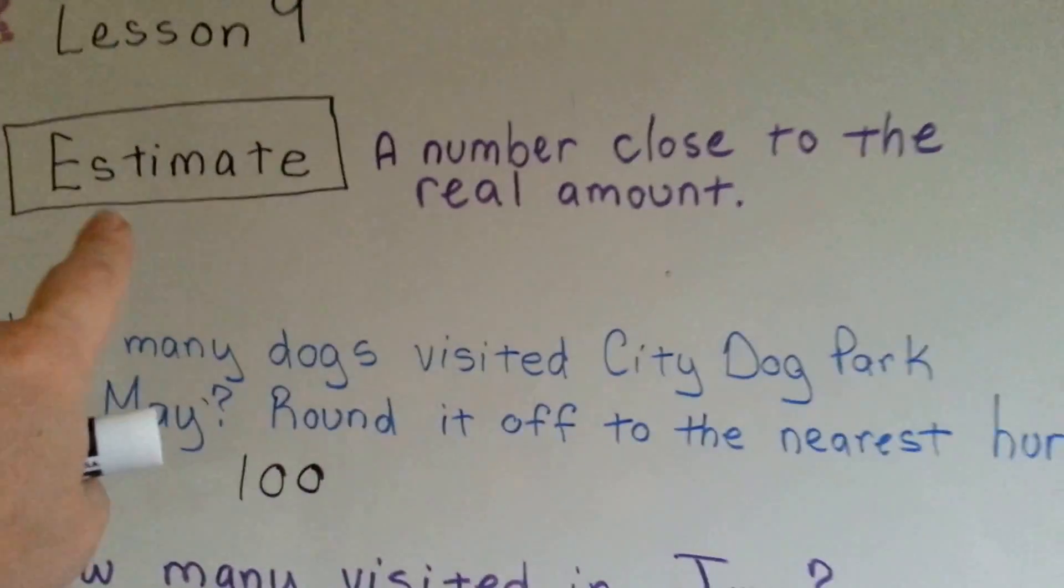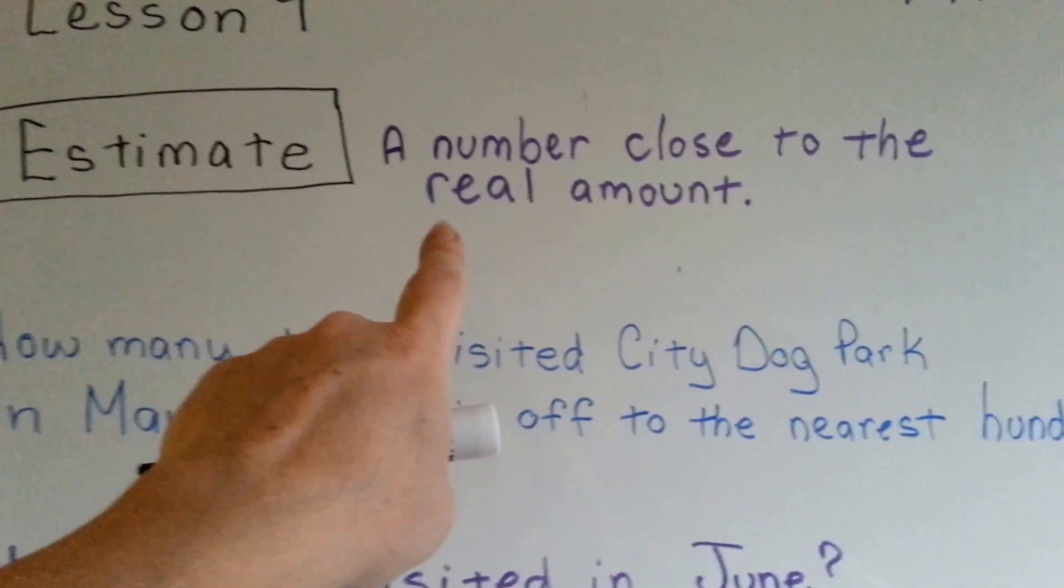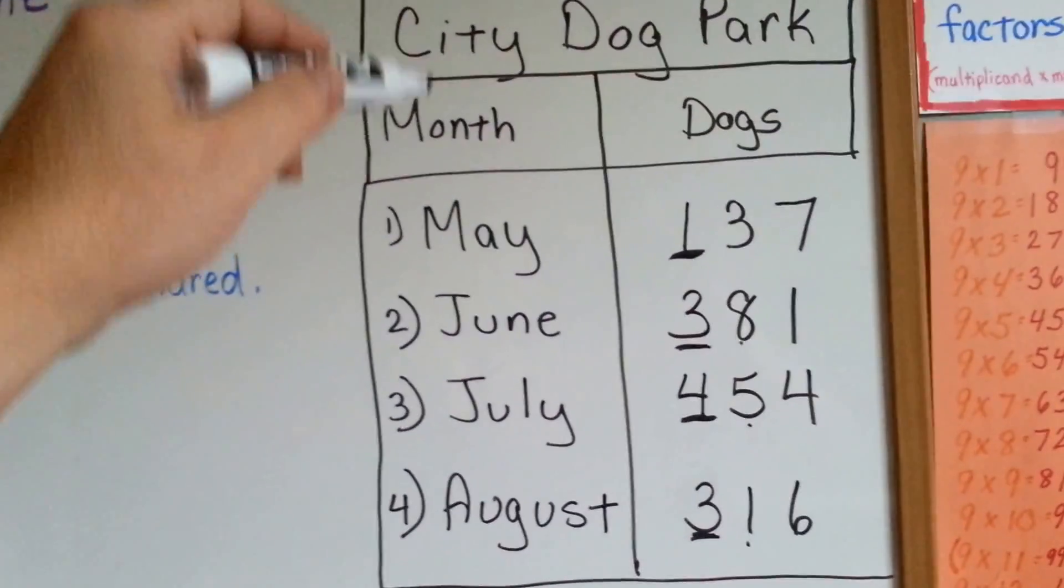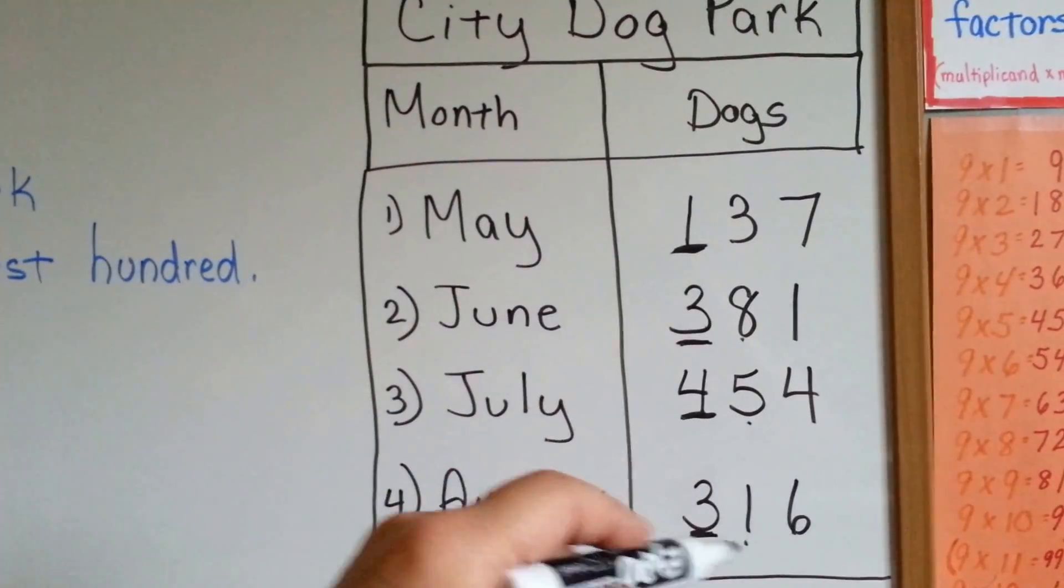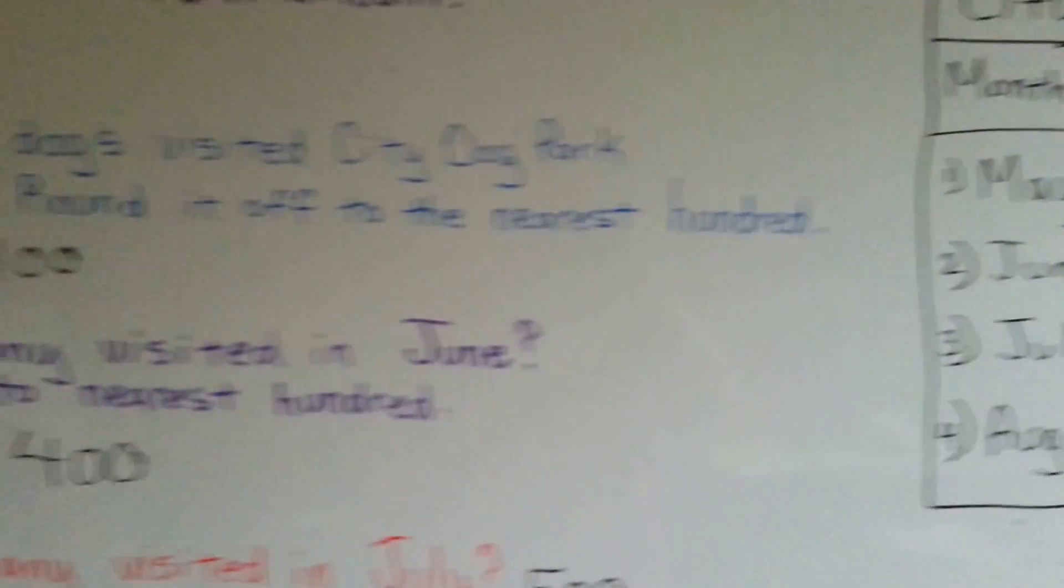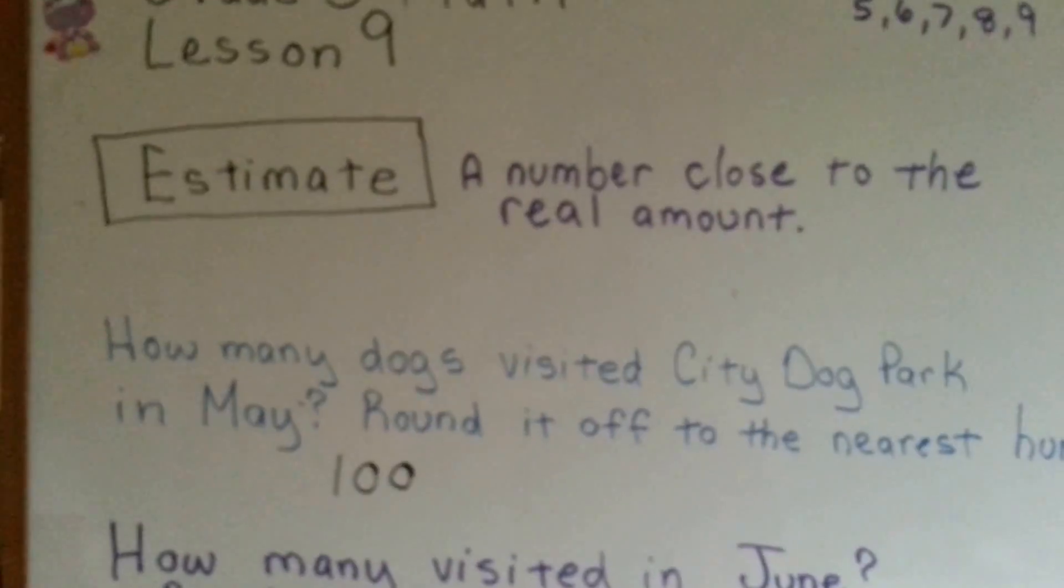So an estimate is not exact. It's just close to the real number. It's just close to the exact number. So this is a table, and it gives you the information, and they're very helpful. So that's how you do an estimate.